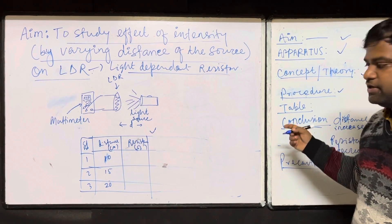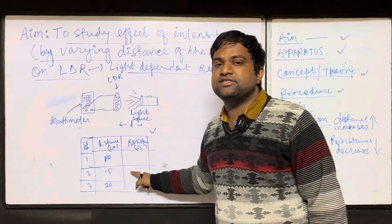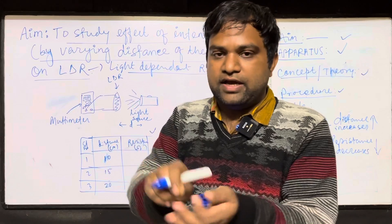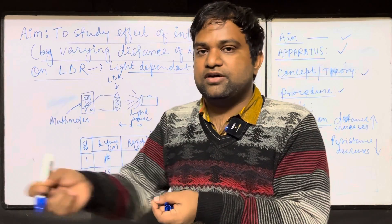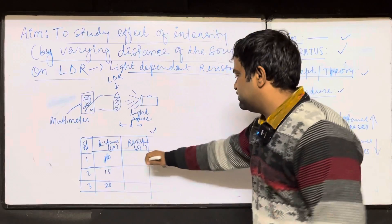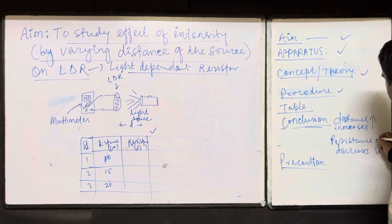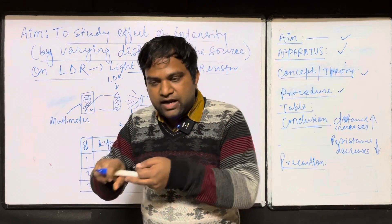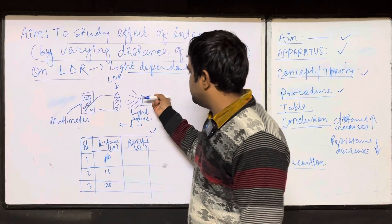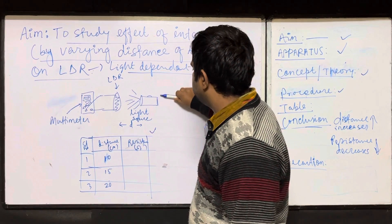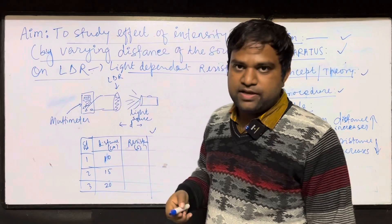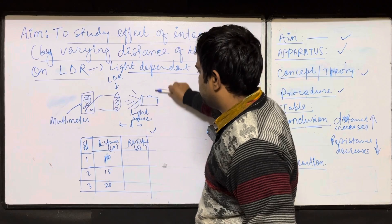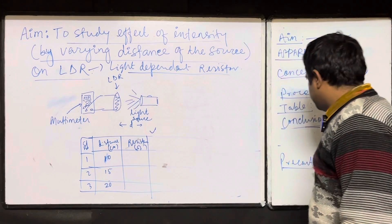Then write the Conclusion: when distance is increasing, the resistance is increasing — when we take the source away from the LDR, the multimeter shows the resistance gradually increasing. Then write Precautions: the connection should be proper, the light source should be held parallel to the LDR properly. If you are holding the source at an angle, the result will vary. It should be parallel — fix it in a vertical way so that it does not shake. Write 2-3 precautions.